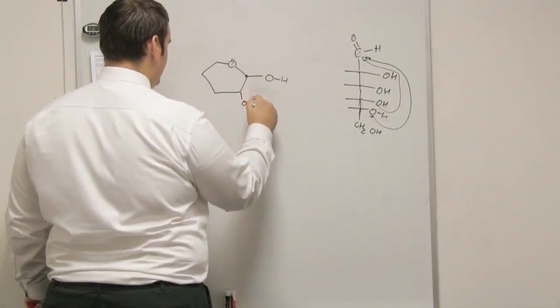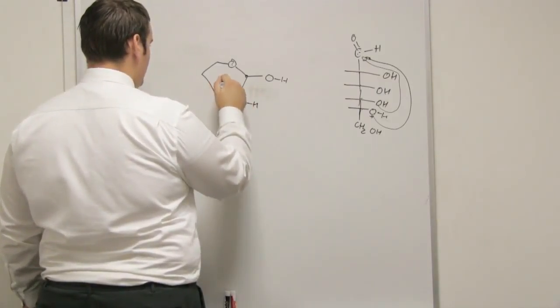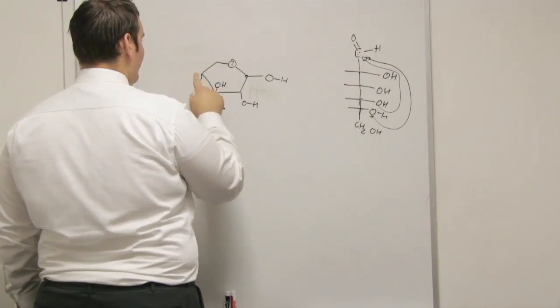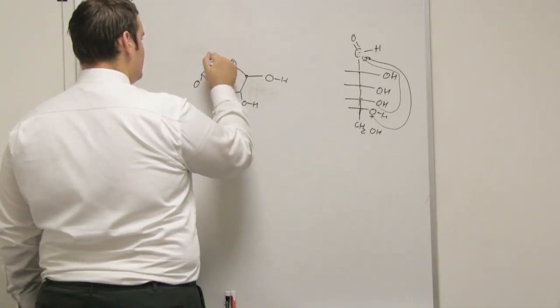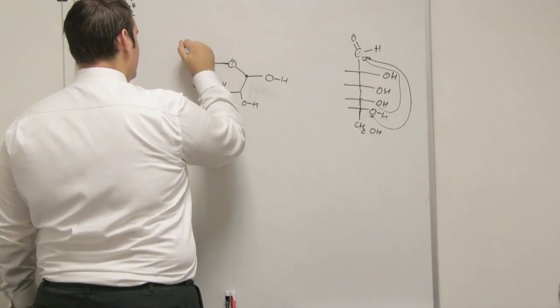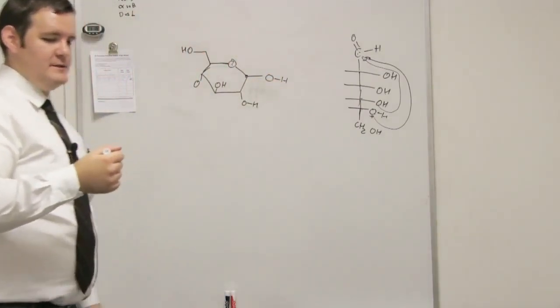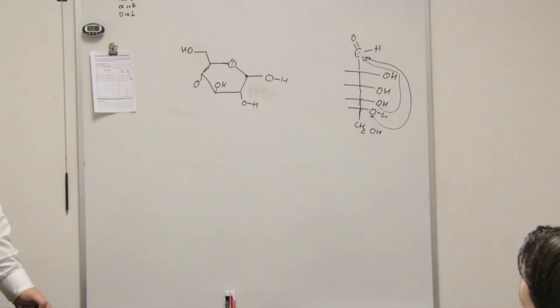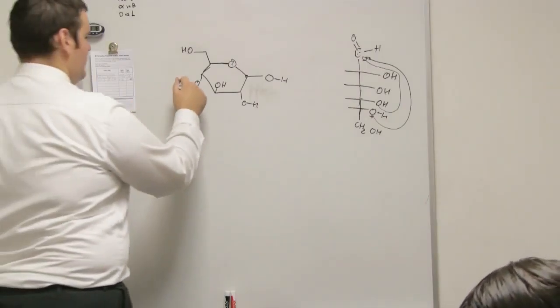He might give you a picture and say like, is this pyranose glucose or is this furanose glucose? Okay. We just have to memorize that. Well, so what's the difference between a furanose and a pyranose? I don't know, I didn't look at those yet. Furanose is a five-member, pyranose is six. Okay.